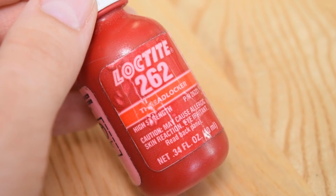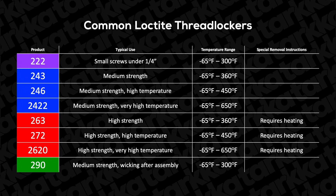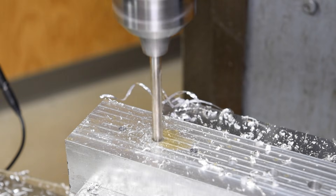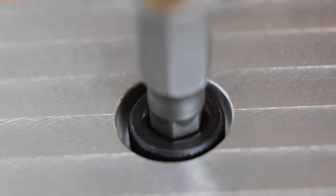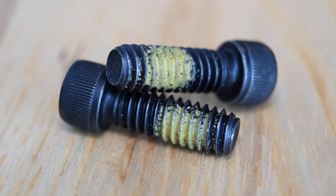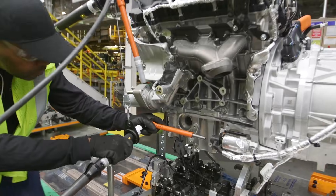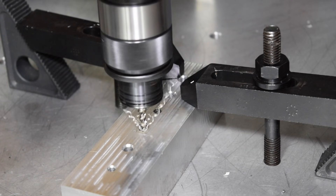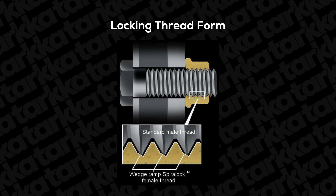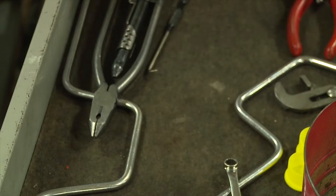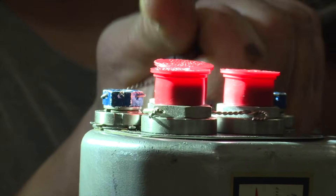Liquid thread lockers like Loctite are another good option. There are scores of formulations on the market designed for different holding strengths, operating temperatures, materials, and thread sizes. It's important to select the correct formula for your application and fully read the manufacturer's data sheet. Some compounds require special primers and curing procedures or only work properly for certain sized fasteners. Loctite works extremely well on clean parts and screws, but it's somewhat sensitive to residual grease and cutting oil, and it's difficult to visually confirm after assembly that it has been applied correctly or even at all. Mass-produced products often use fasteners with a nylon patch pre-applied to the threads; this isn't as effective as Loctite, but it is a lot faster to assemble. There are also proprietary taps that cut a special thread form compatible with standard fasteners, where the modified thread geometry creates a locking effect.